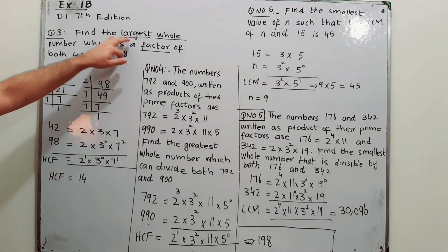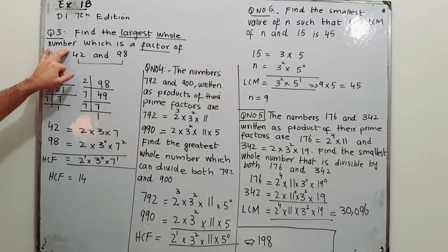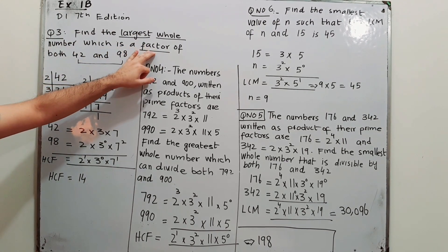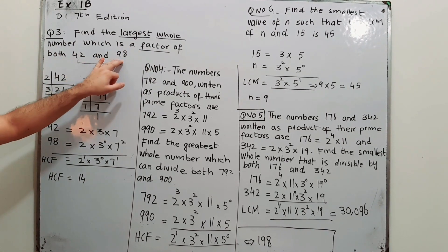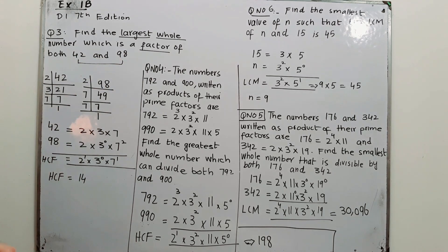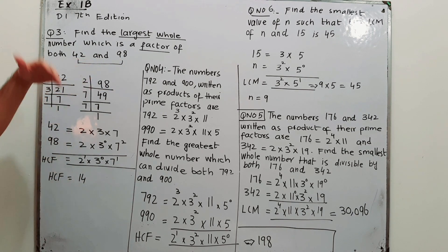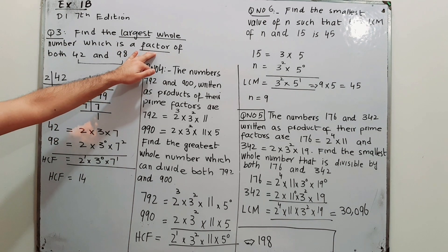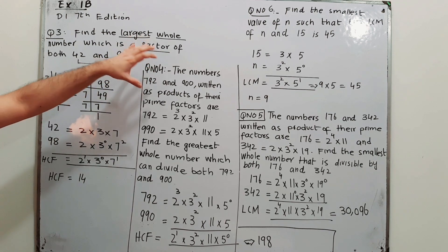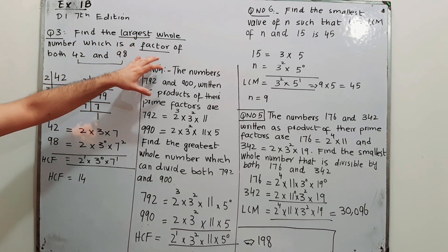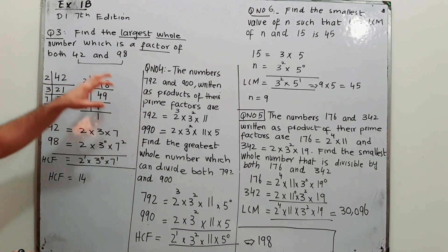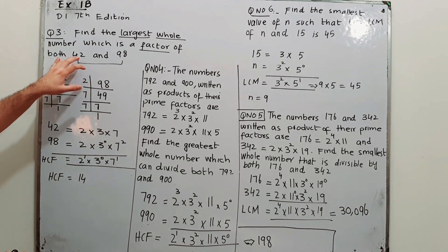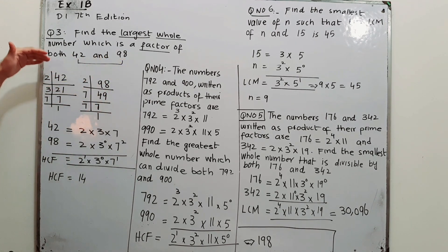Find the largest whole number which is a factor of both 42 and 98. First of all, you have to decide whether we are going to find LCM or HCF. Whenever the word 'factor' is used, keep in mind that we are talking about HCF.